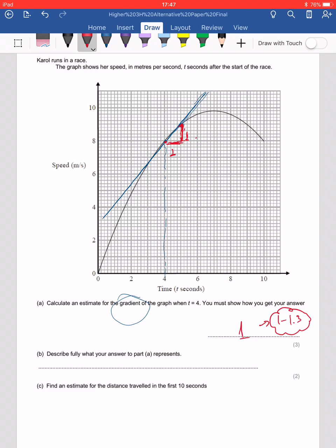It's asking me to explain or describe what my answer represents for the previous part. So when you're working out the gradient here, what you're actually working out is the acceleration four seconds after the start of the race.